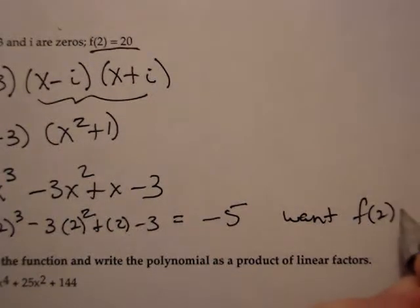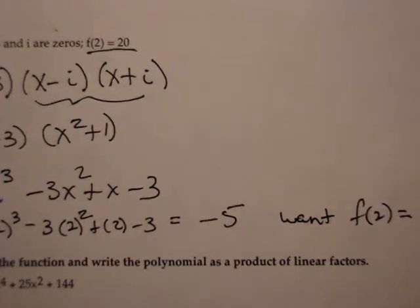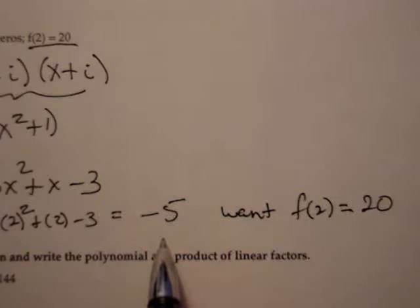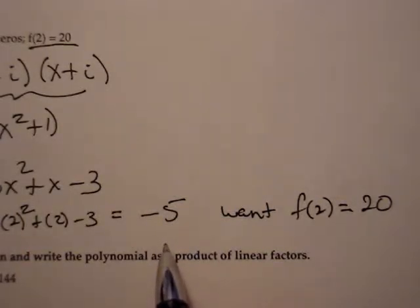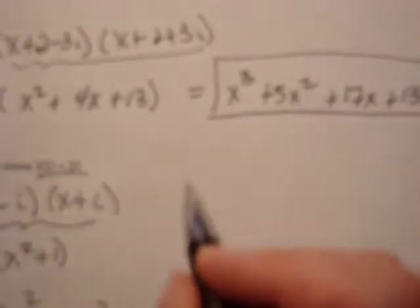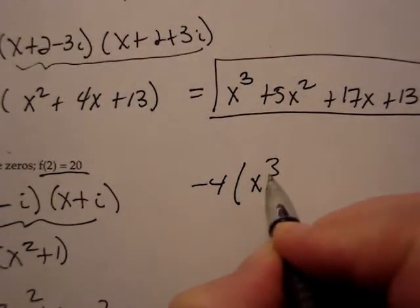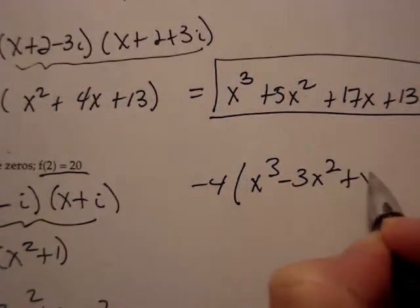We want f of 2 to equal 20. What we have is that f of 2 equals negative 5. So this actually tells us what to multiply by. What times negative 5 will give me 20? Negative 4. So that means what I want to do now is take negative 4 times the polynomial that we found from multiplying our factors together.